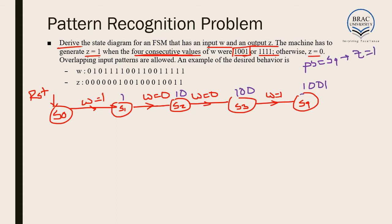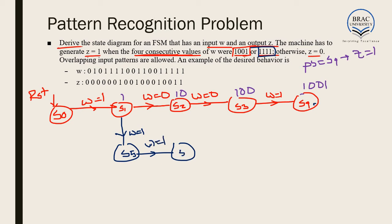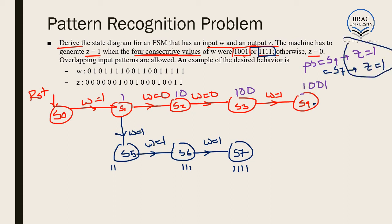We have another pattern 1 1 1 1. Moving from S0: W equal to 1 reaches S1. From S1, W equal to 1 reaches S5 — since S1 through S4 are already used. Then W equal to 1 takes us to S6, and W equal to 1 takes us to S7. At S7, the pattern is 1 1 1 1, so Z equals 1 again. Z is 1 when present state is either S4 or S7; in all other states Z equals 0.